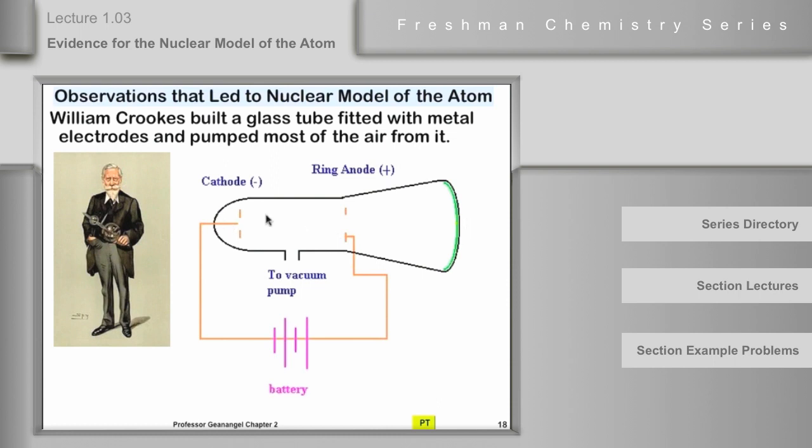He took a glass envelope, hooked it up to a vacuum pump. He had put a couple of metal electrodes in there. On the left side was something called the cathode, which is a negative electrode connected to the negative part of the power supply. And then there was a ring anode, which is simply a circular piece of metal with a hole in it, hooked up to the other side of the power source.